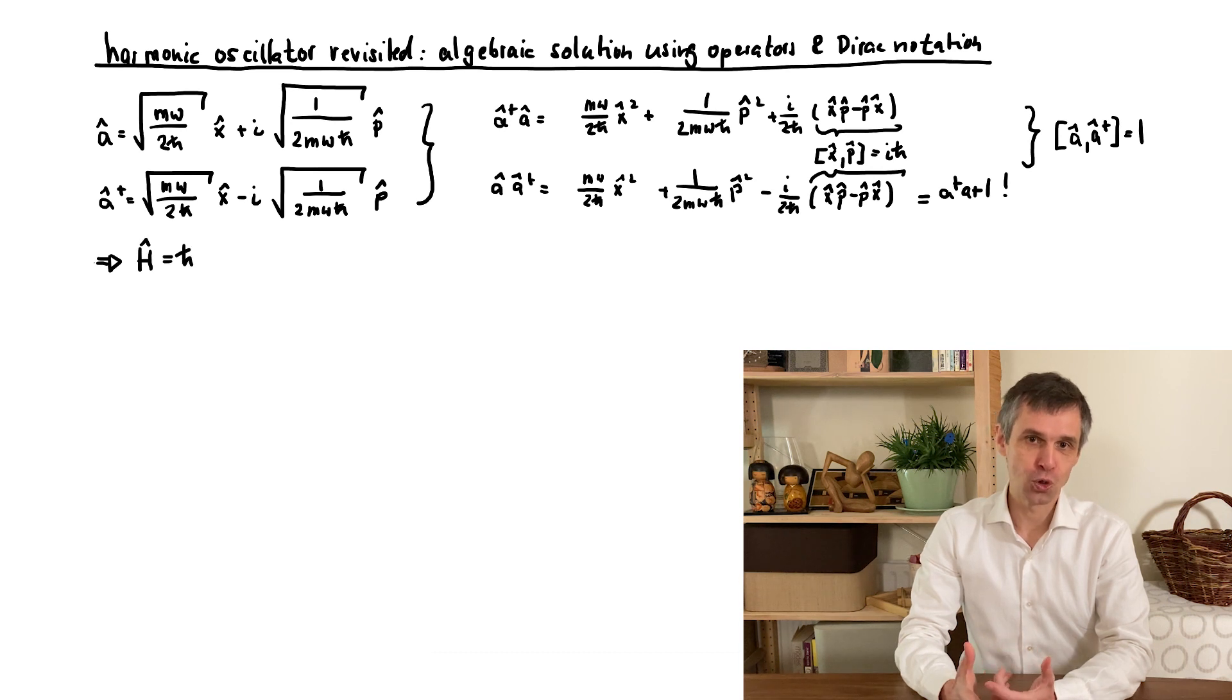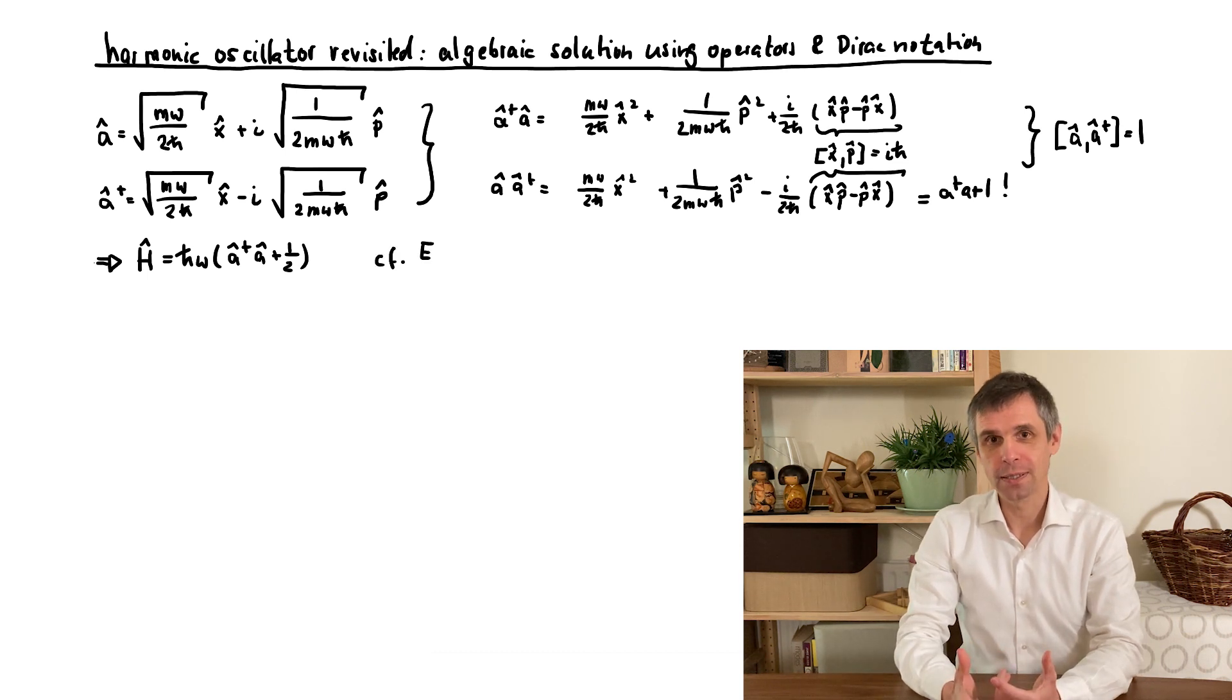Actually, we have two choices. What I write down here is the standard choice of ordering these operators. Now, if you think of it, written like this, the Hamiltonian almost looks like the eigenenergies that we expected to find. They result when we would replace this combination A-dagger-A by a non-negative integer n.